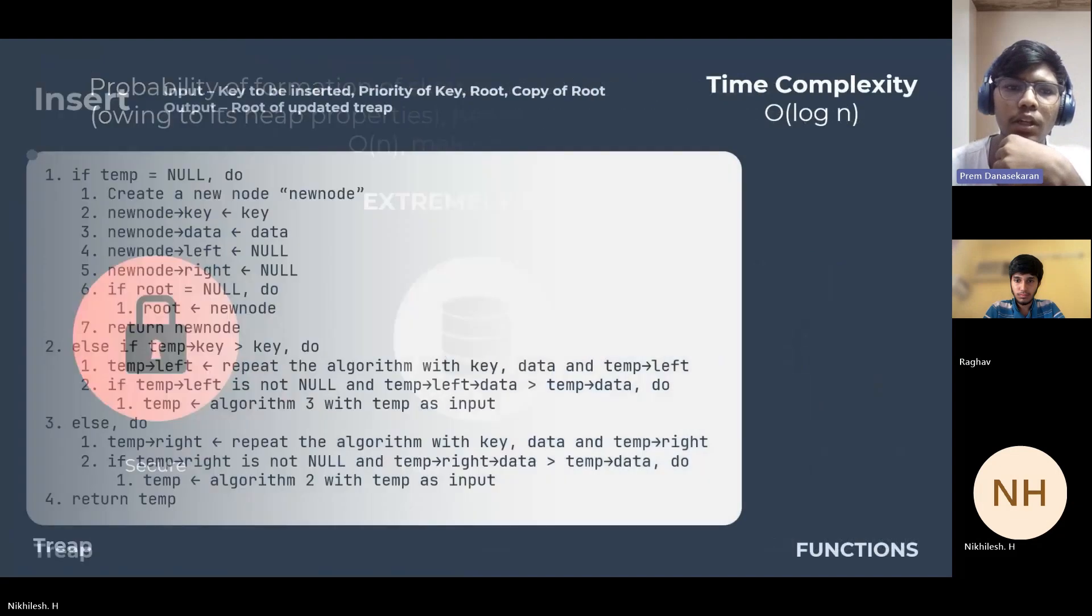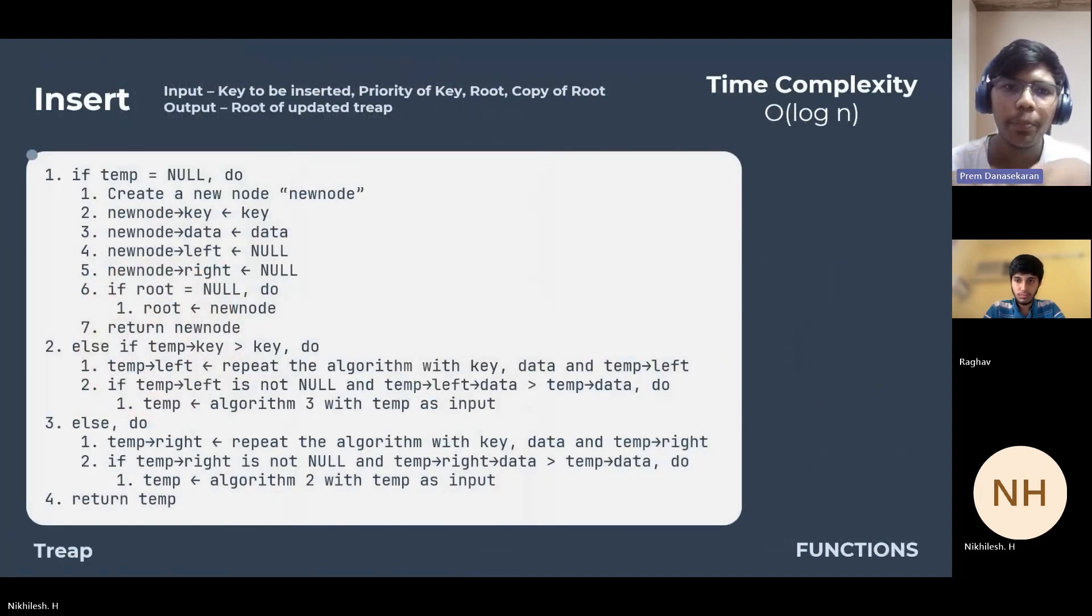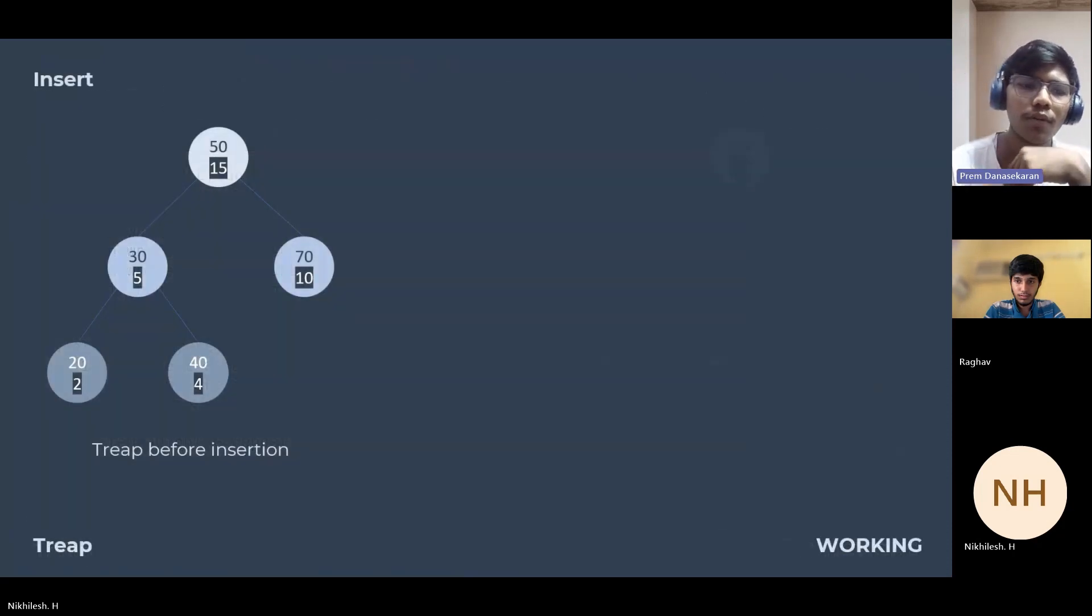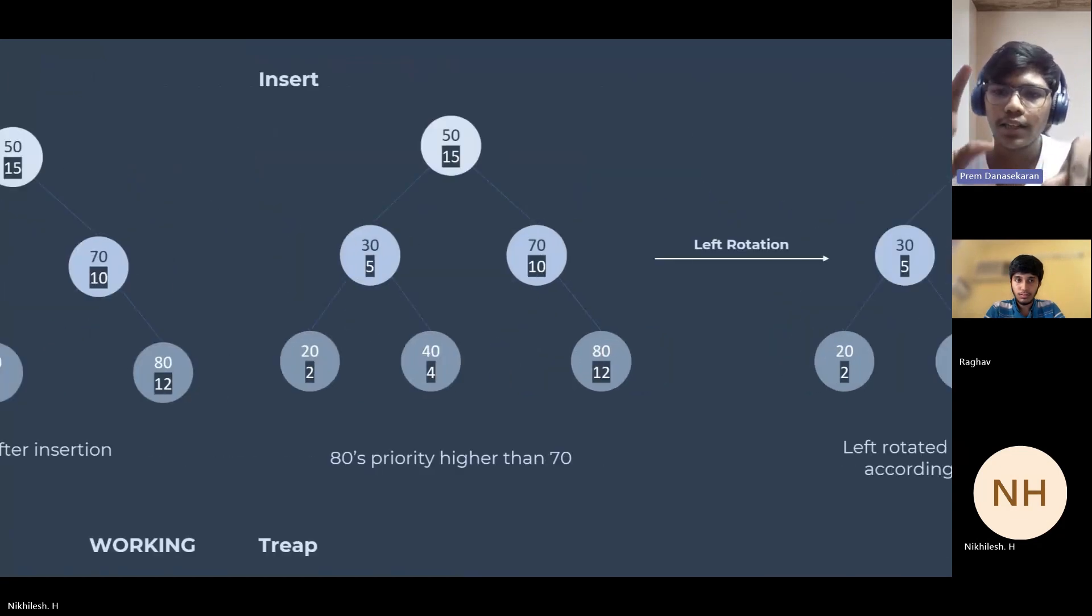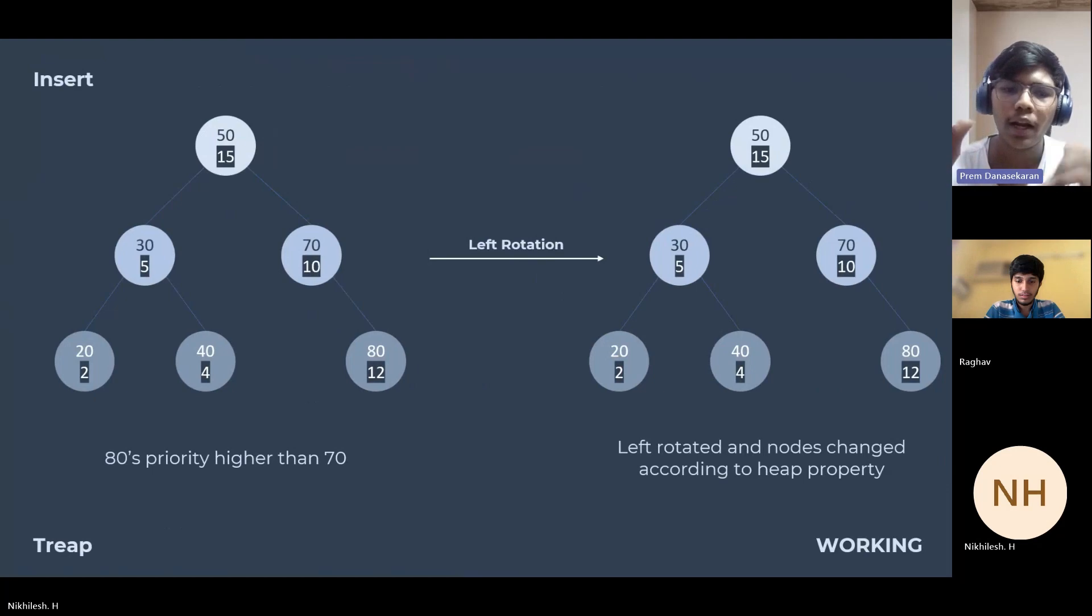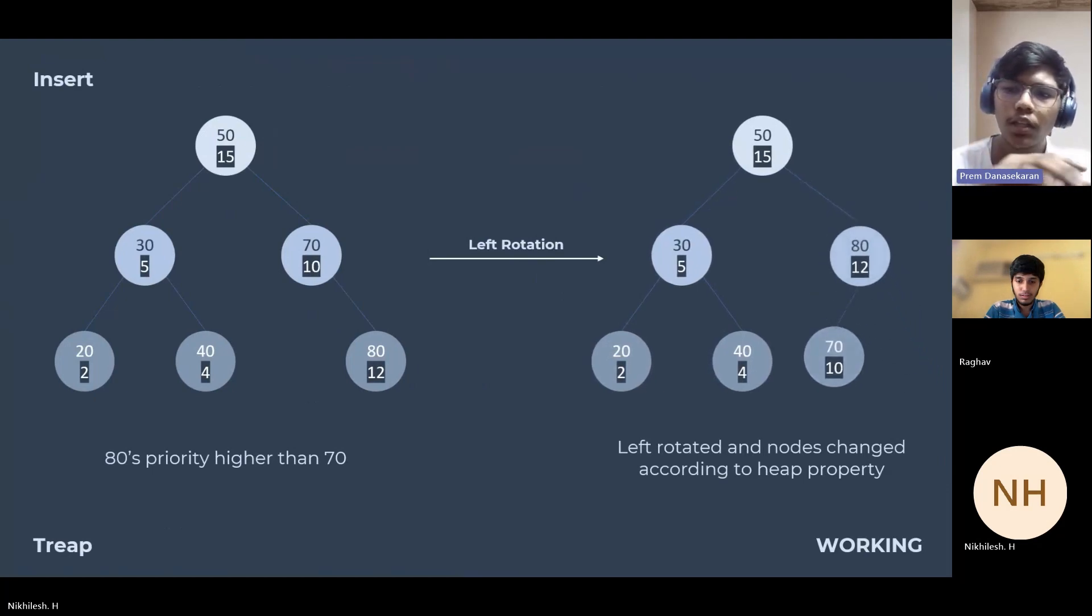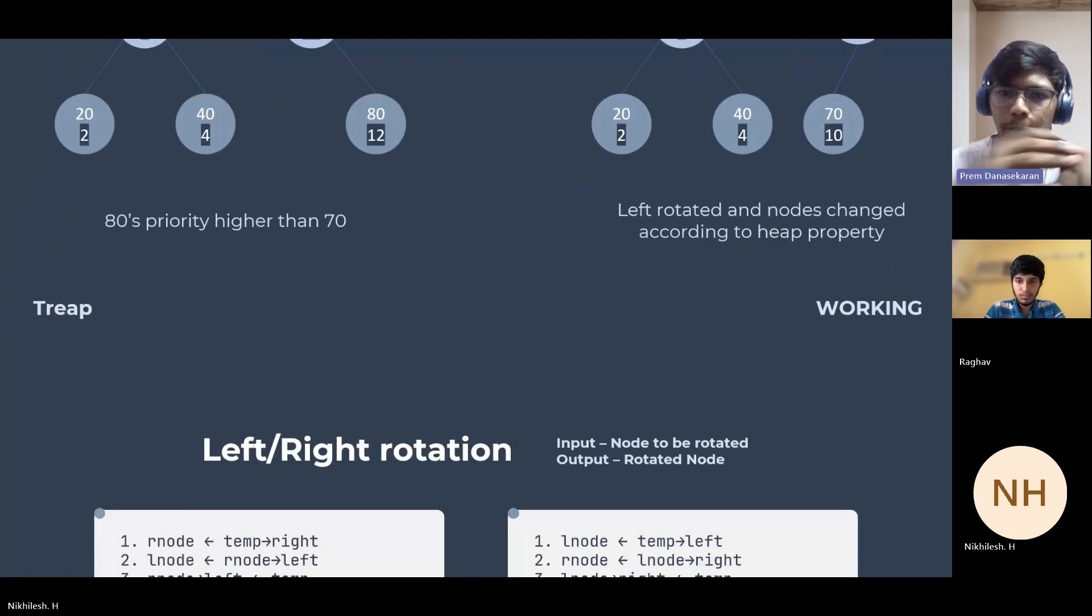Next we'll see about insertion in the Treap. The insert function is designed to incorporate user-provided key and data values into a Treap structure. This process adheres to two fundamental properties: maintaining the binary search tree initially, followed by the necessary rotation to ensure the preservation of heap property. The time complexity of this operation is O(log n). For example, we insert 80 with random priority 12. First it is inserted according to the binary search tree property and necessary rotations are performed so that it satisfies the heap property.